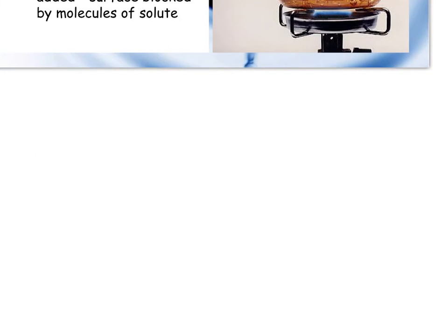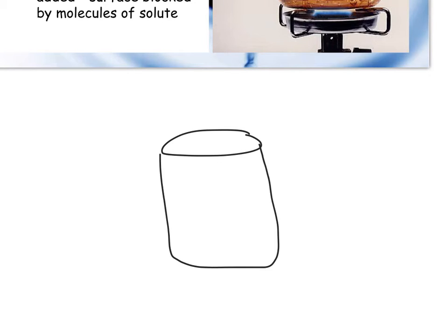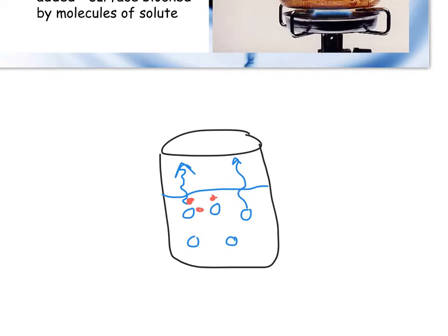What we're really looking at is: we have a beaker or container with a liquid — let's say water as our solvent — and we have these particles. As they start to evaporate, they're pushing upwards. But if we have particles of something like salt or sugar mixed in, what they're actually going to do is, in some cases, block the path of the water molecules as they're trying to evaporate.